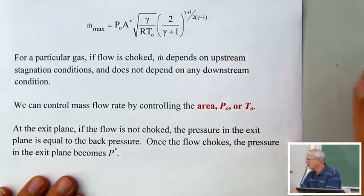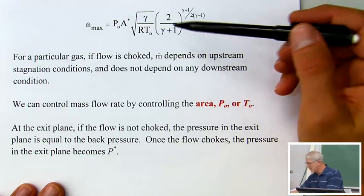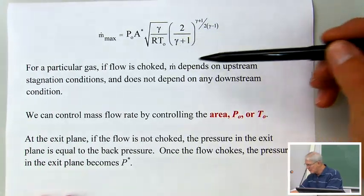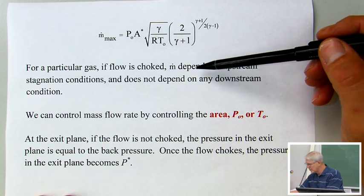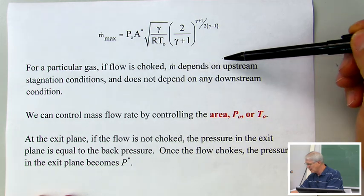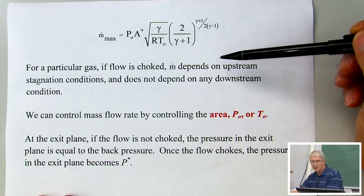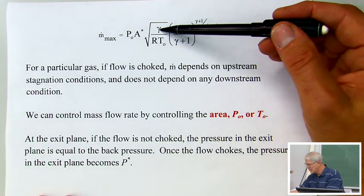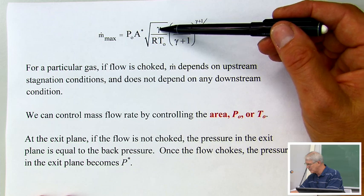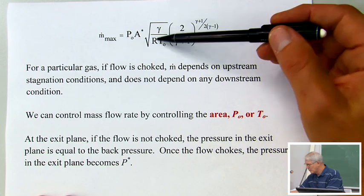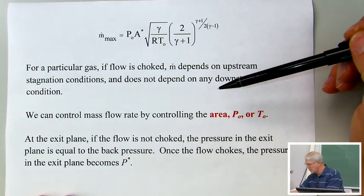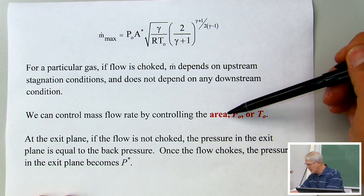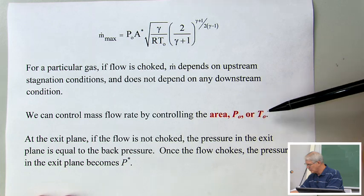This is the maximum mass flow rate we can have in the nozzle. For a particular gas, if the flow is choked, the mass flow rate depends on the upstream stagnation conditions and does not depend on any downstream conditions. The things that refer to a particular gas are gamma and R. If we don't change these, everything depends just on the upstream stagnation conditions, and we can control the mass flow rate by controlling the exit area, the stagnation pressure, or the stagnation temperature.